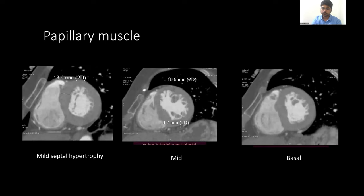The reason why we need to look for these abnormalities is that this can cause LVOT obstruction and mitral regurgitation. When not addressed — and only the septal thickening is addressed by ablation or surgery — there will be persistent LVOT obstruction and SAM.